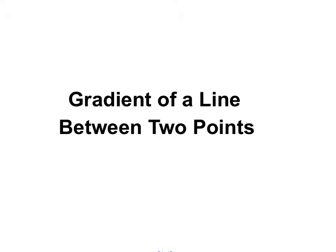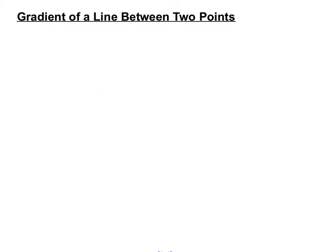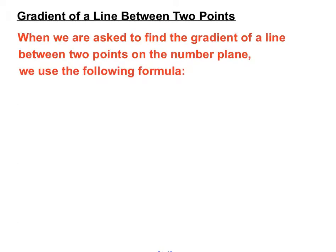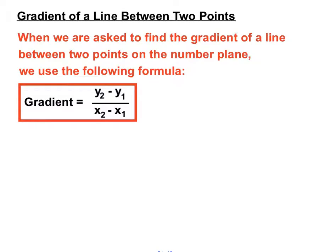Hi there, this video is looking at finding the gradient of a line between two points on the number plane. When we're asked to find the gradient of a line between two points on the number plane, we can use this formula: gradient equals y2 minus y1 over x2 minus x1.